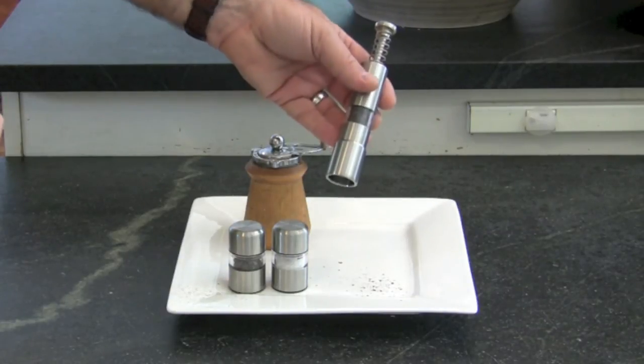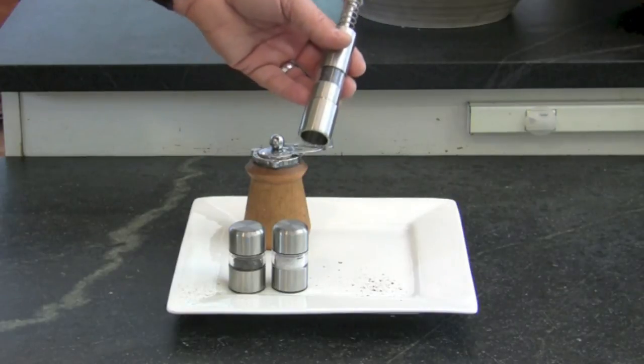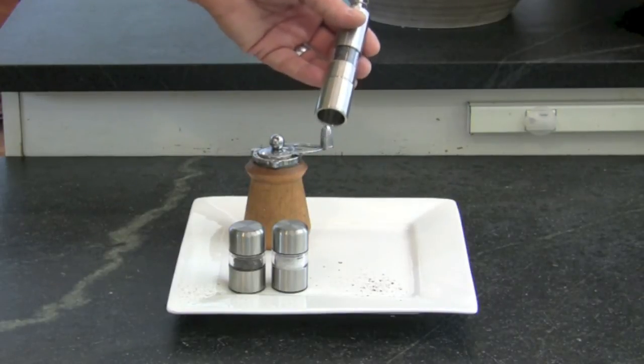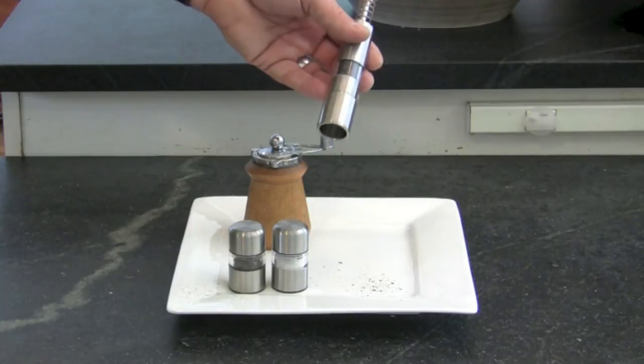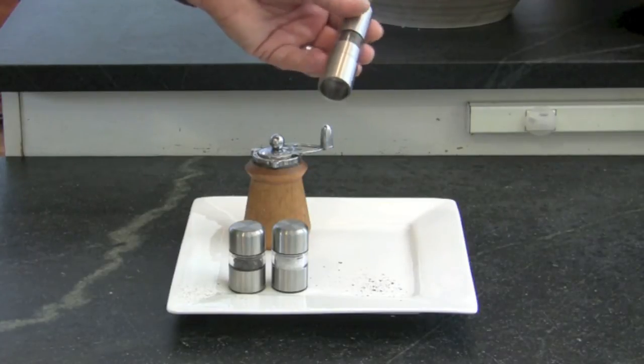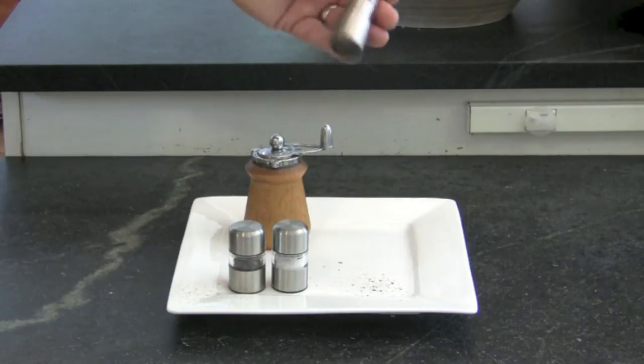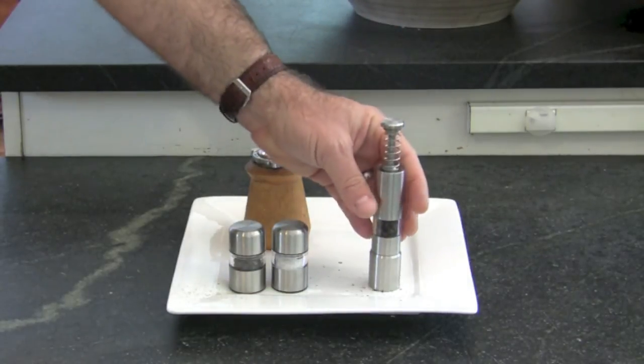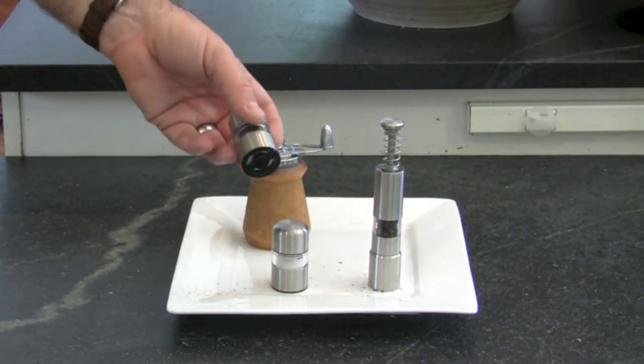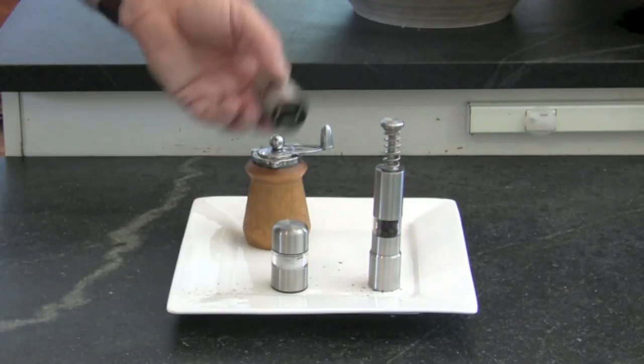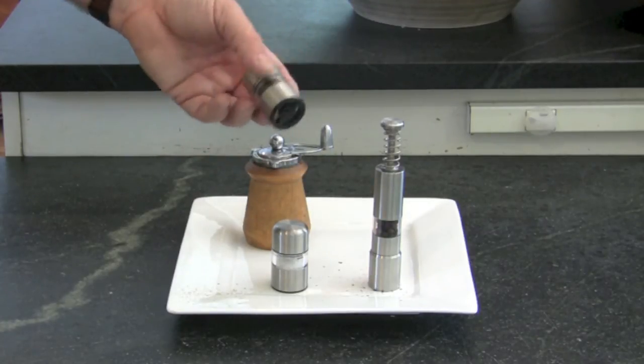The other thing is I'm using Tellicherry peppercorns, which is the largest peppercorn available. And this has a little bit of a problem feeding it. You've got to shake it around sometimes. Strangely, these tiny little mills have no problems at all. They take the Tellicherry peppercorns and reduce them to powder very easily.